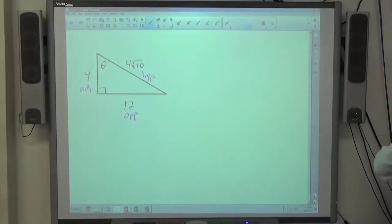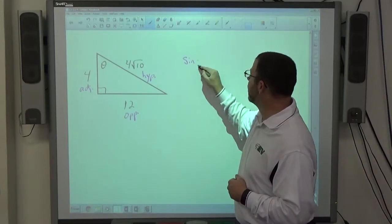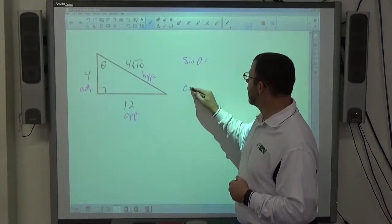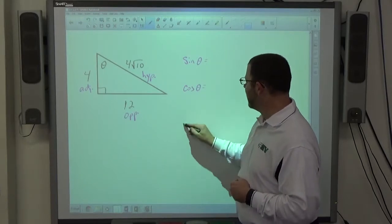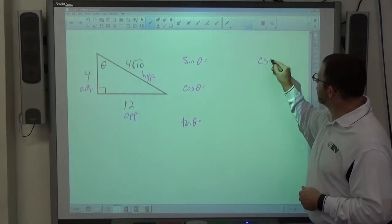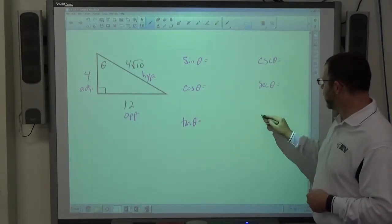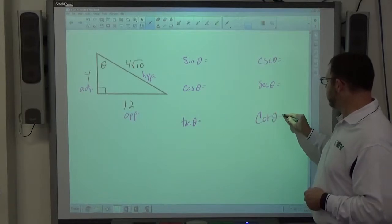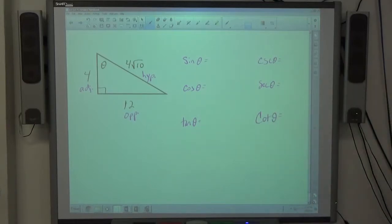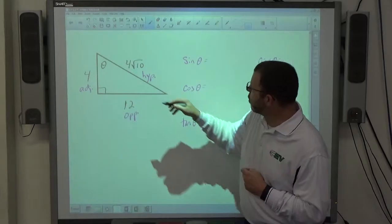All right, so again, I'm going all through the whole process I did before. I've got SOH-CAH-TOA going on here first, so sine of theta equals something, cosine of theta equals something, tangent of theta equals something, and then we have cosecant of theta equals something, secant of theta equals something, and cotangent of theta equals something. All right. So again, there's my six trig functions, so I want to identify each of these things.